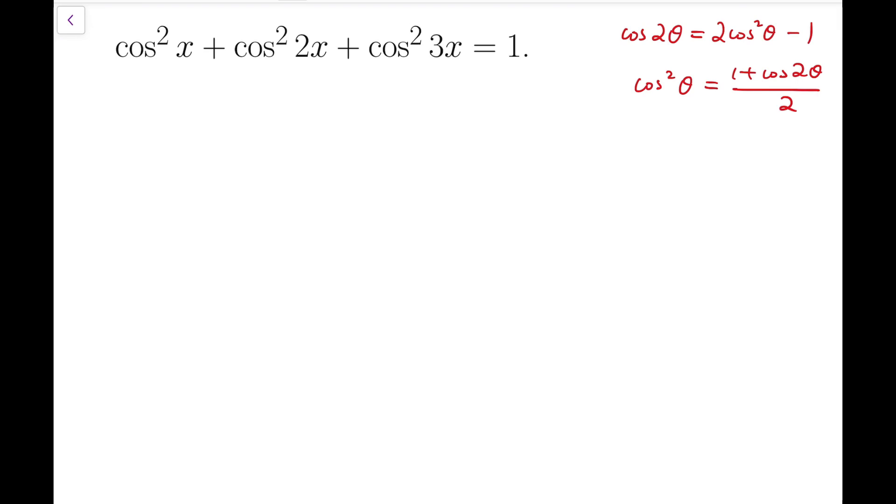I'm going to apply this to all three terms on the left-hand side. We'll have (1 + cos 2x)/2 + (1 + cos 4x)/2 + (1 + cos 6x)/2 = 1.